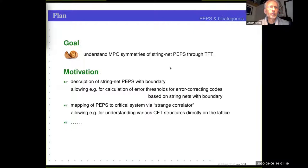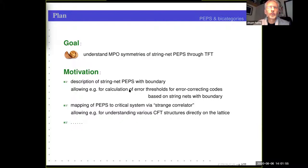There are various motivations for doing that. If you have a PEPS describing string nets, then there are situations where you want to allow for boundaries, and this has various applications, for example, for some aspects of error correcting codes. Another important area is the relation to conformal field theory. There has been introduced something called a strange correlator, which allows you to understand various aspects of conformal field theories directly on the lattice. But I don't want to talk about these motivations in any detail.